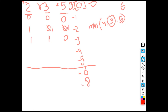Whenever the minimum value was created using twos, we increment the count x by one. Similarly, if the minimum came from threes, we increment y; for fives, we increment z. This is a dynamic programming approach where we store earlier values and build the next minimum from them.